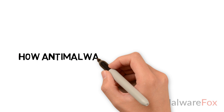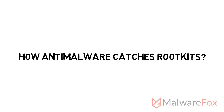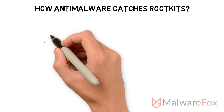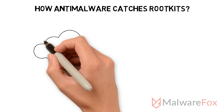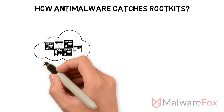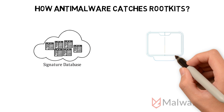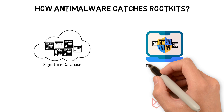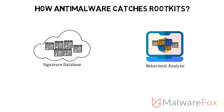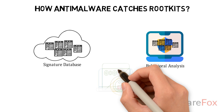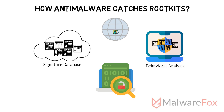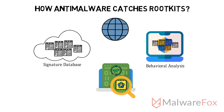How anti-malware catches rootkits: It is difficult for traditional antivirus to catch rootkits. Rootkit anti-malware needs both signature-based and behavioral-based detection methods. Patching security loopholes and vulnerabilities with the latest updates removes the chances of rootkit infection.